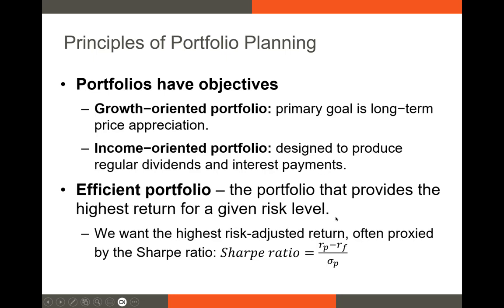In portfolio management we have a couple of different ways to measure efficiency. We'll talk about others in about two weeks, but for our purposes today the most prominent formula to determine the efficiency of a portfolio is going to be the Sharpe ratio: the return on the portfolio, R sub P, minus the return on the risk-free rate — say a one-year T-bill — all divided by the standard deviation of the portfolio, sigma sub P.